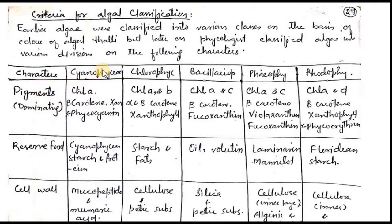We have five main groups of algae: Cyanophyceae, also known as blue-green algae; Chlorophyceae, that is green algae; Bacillariophyceae, which are diatoms; Phaeophyceae, that are brown algae; and Rhodophyceae, which is also known as red algae.